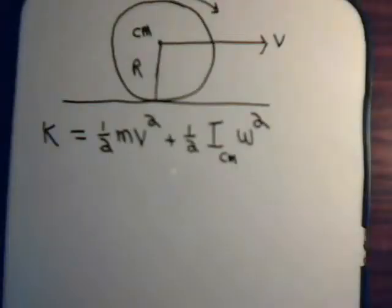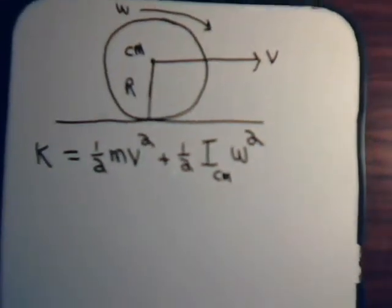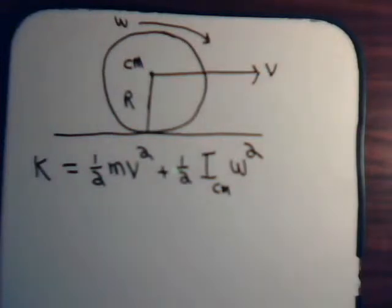This is video 30 in our series Analytical Mechanics. The playlist for all the videos is at the website digital-university.org. In this video we're going to consider a rolling disc and consider the kinetic energy of the system.